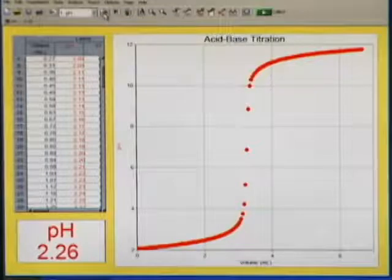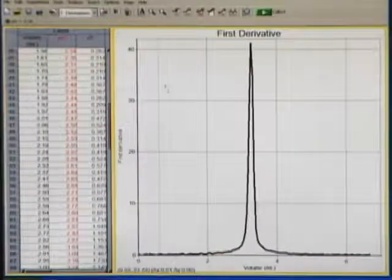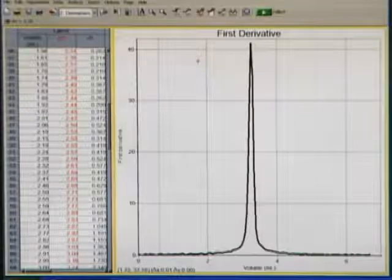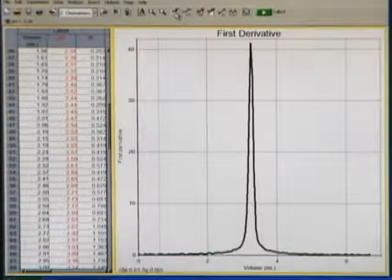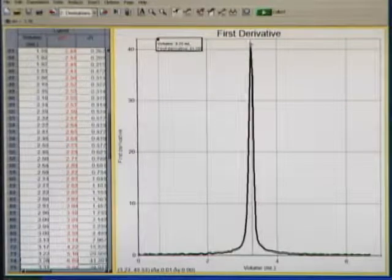So up here in the toolbar, I'm going to click on the next page button, which takes us to the first derivative. The peak of this first derivative peak is going to tell us what our equivalence point volume would be. If I turn on the examine button on the toolbar and come over here to the peak, it is showing us that the volume is around 3.2 milliliters for that equivalence point.